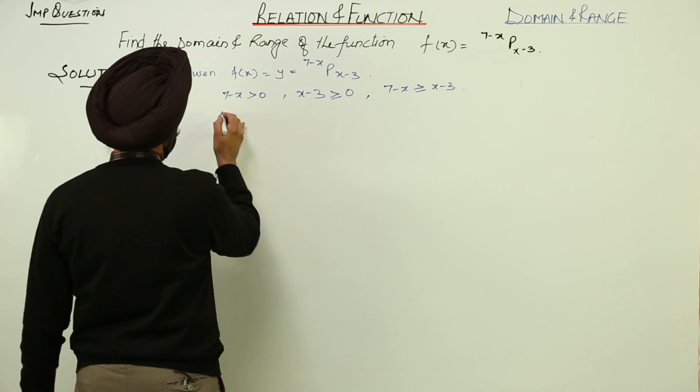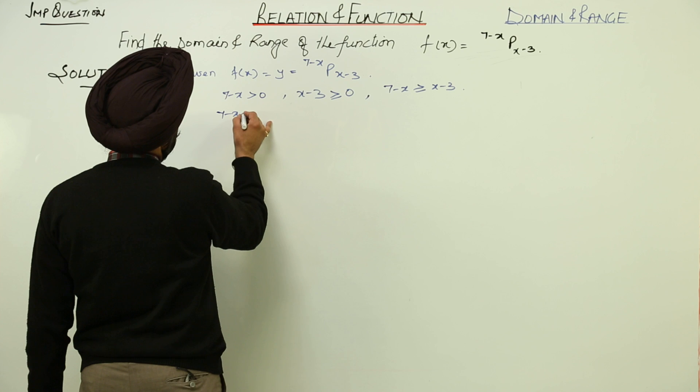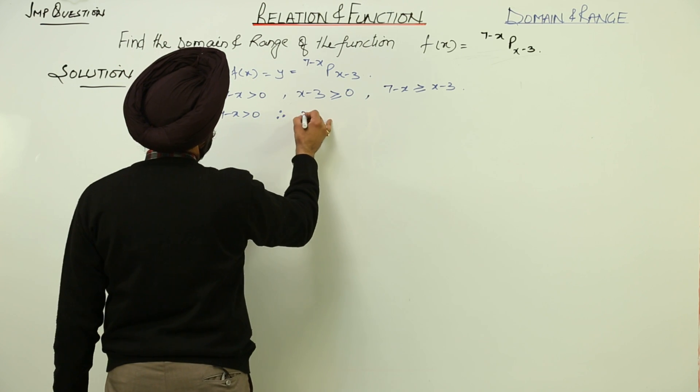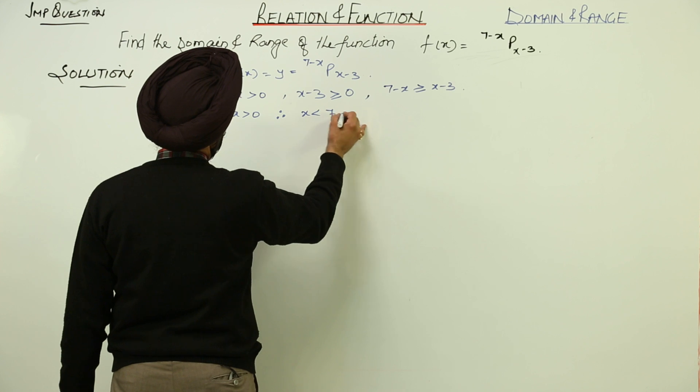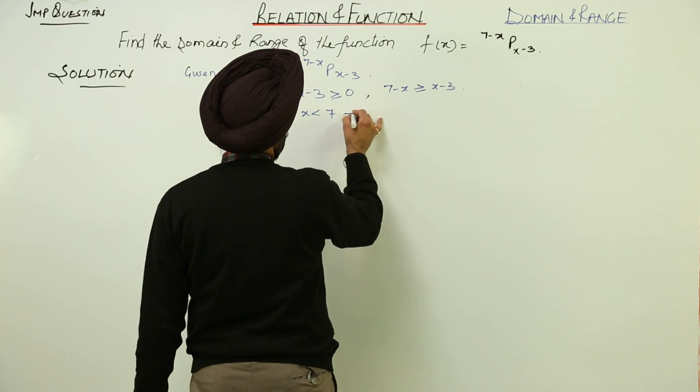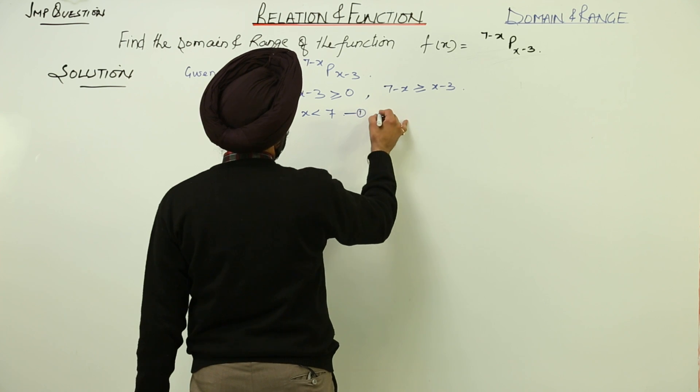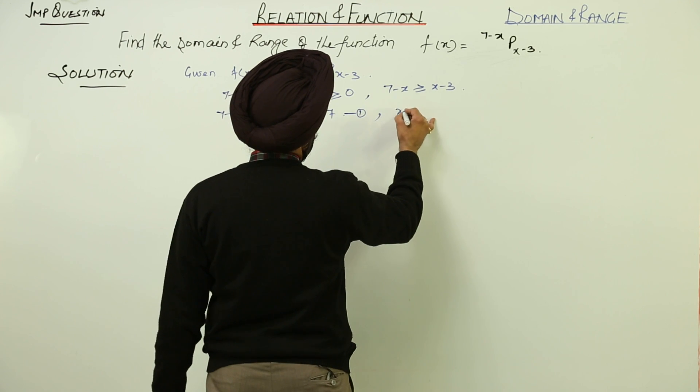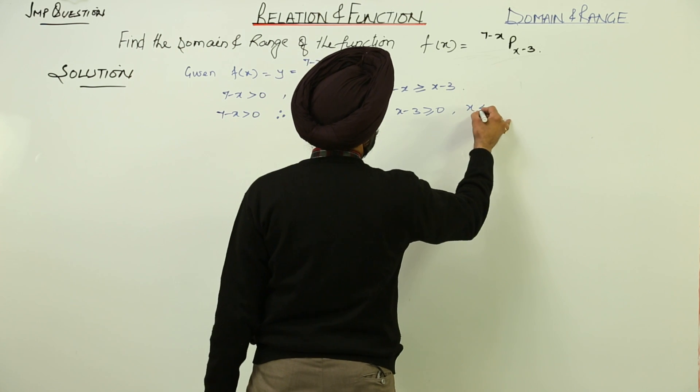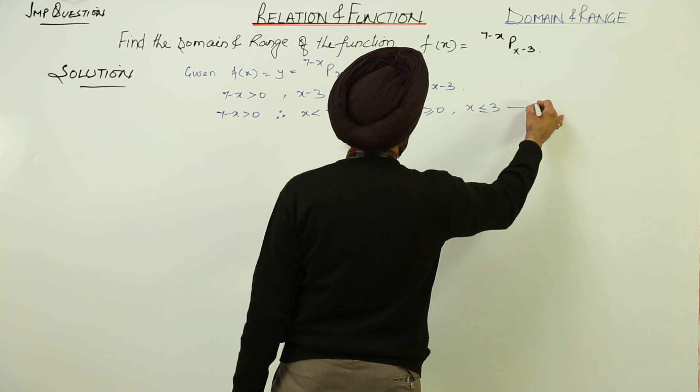For this part, first one we are having 7 minus x is greater than 0. Therefore, x is less than 7. Let it be 1 first. Then x minus 3 is greater than or equal to 0. x is greater than or equal to 3. Let this be 2.